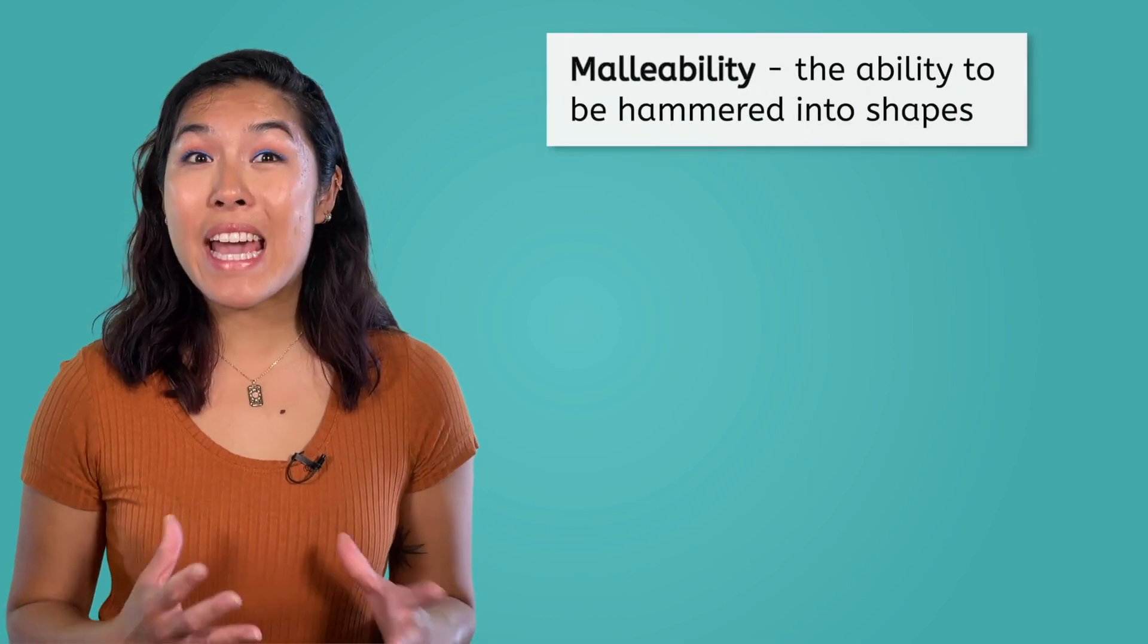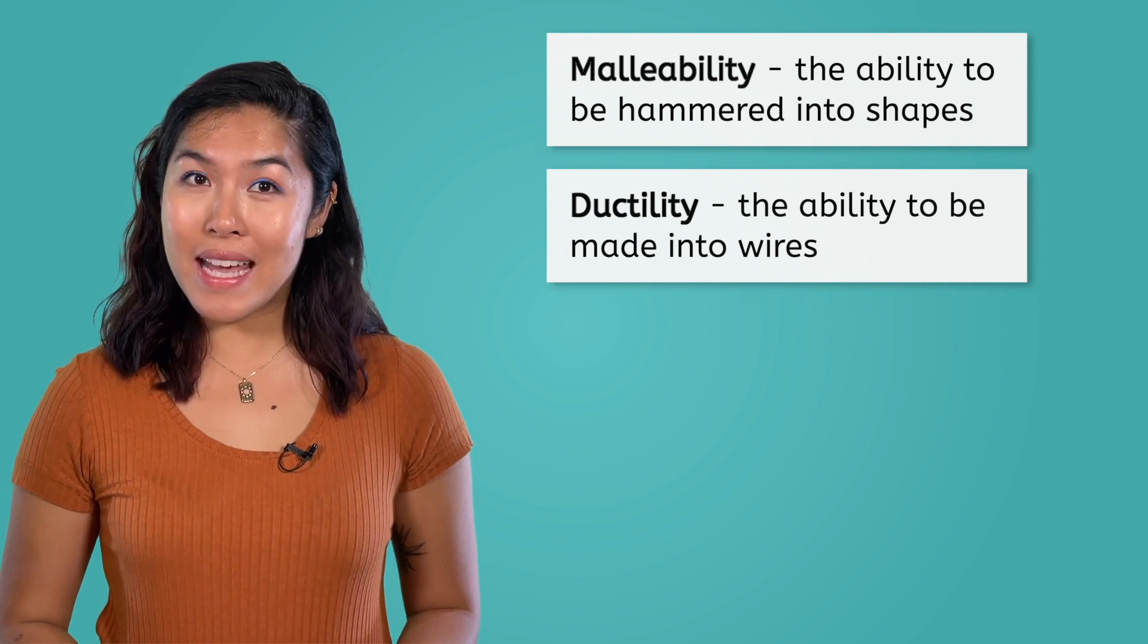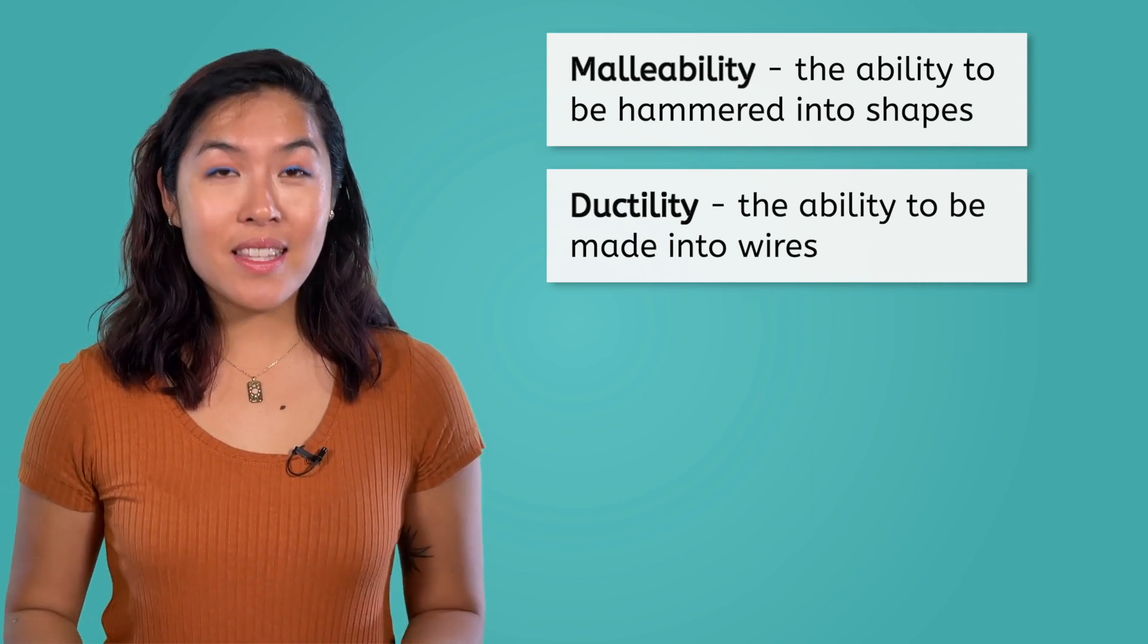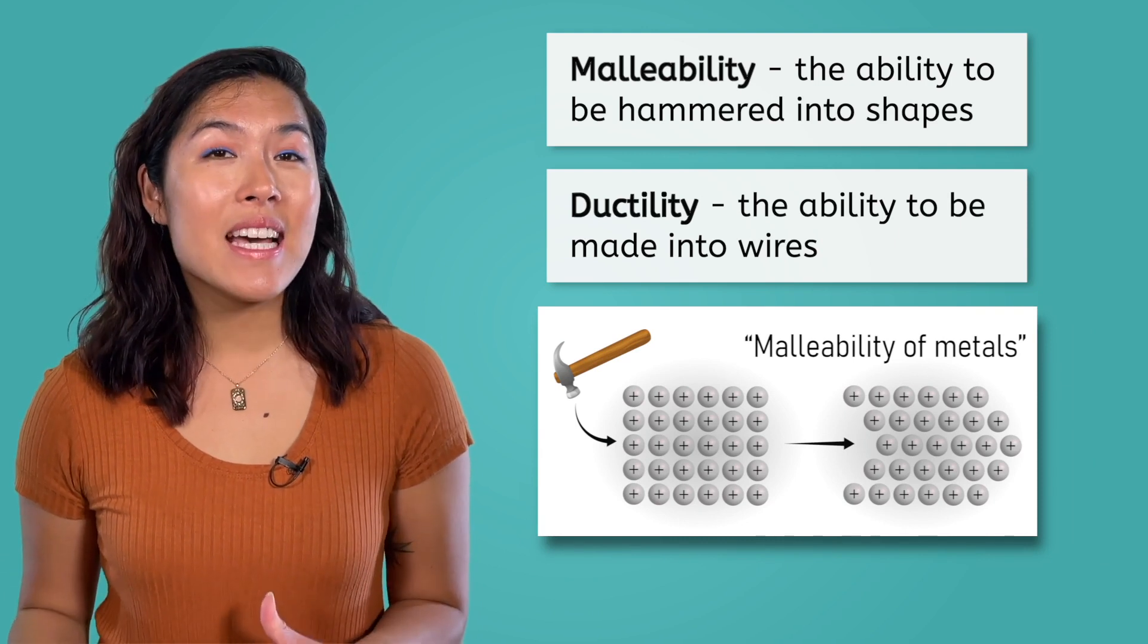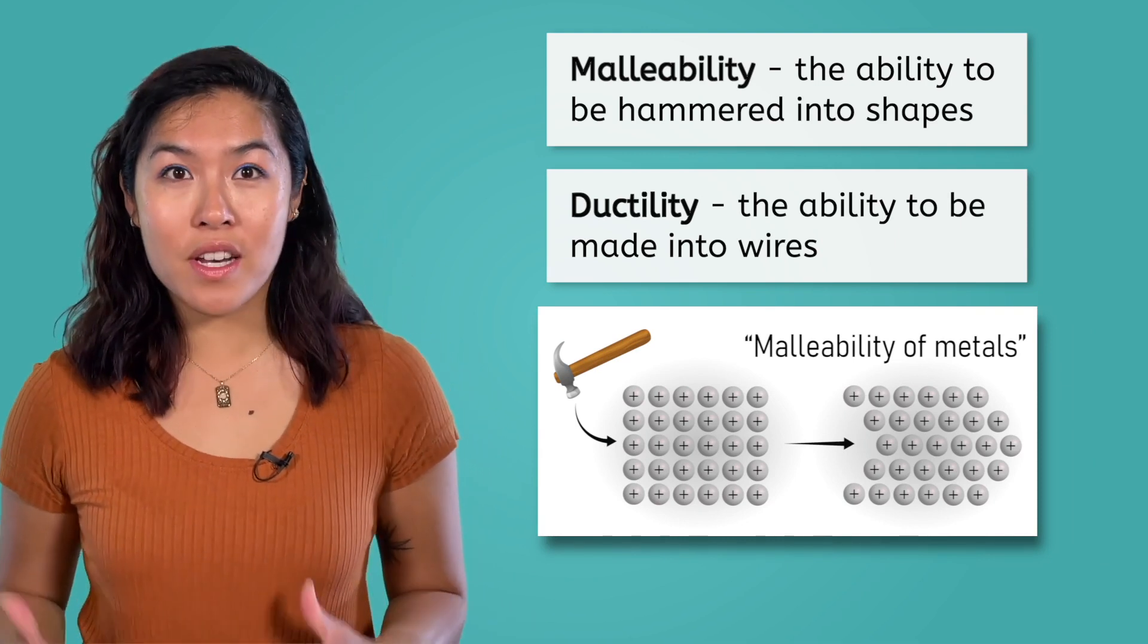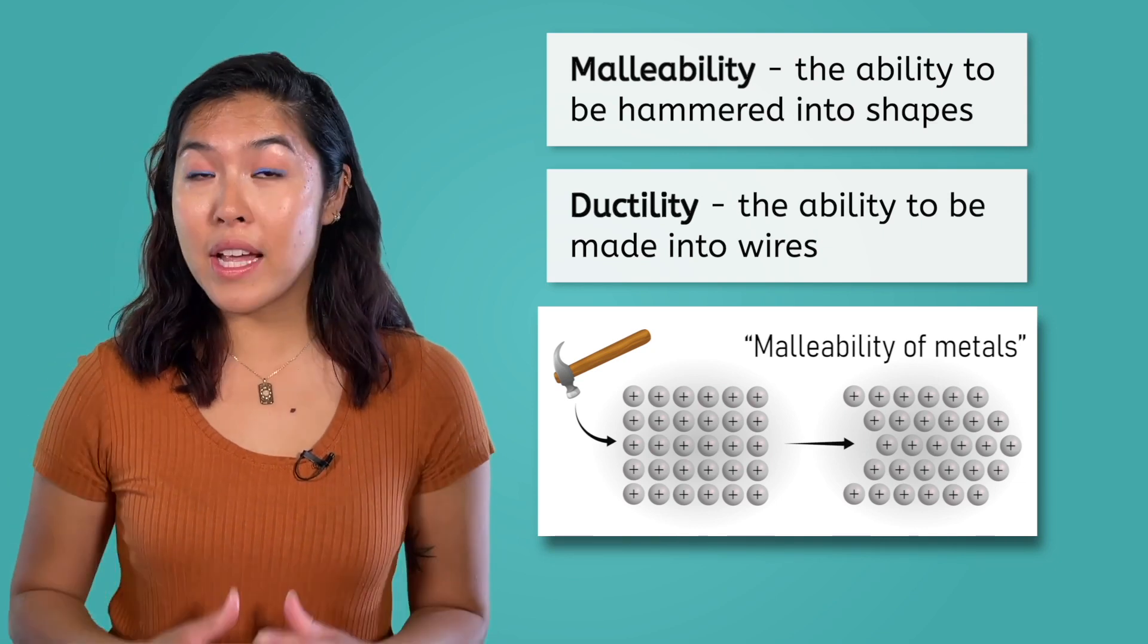Jewelry and wires are often made of metals. This is due to their malleability and ductility. Malleability is the ability to be hammered into shapes, and ductility is the ability to be made into wires. These shape changes are due to the ability of the positive nuclei easily sliding past one another, allowing the metal to deform, but not break or crack.